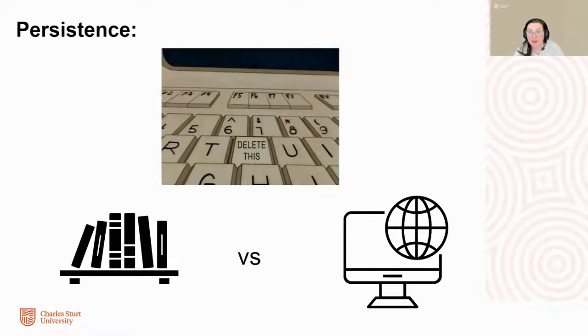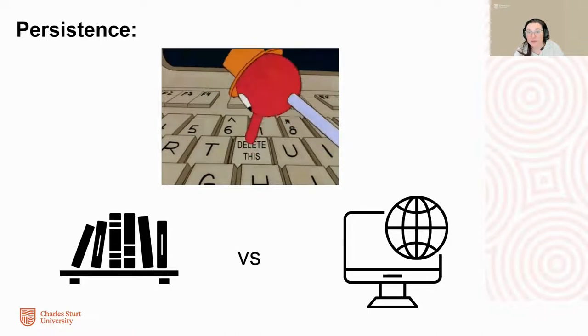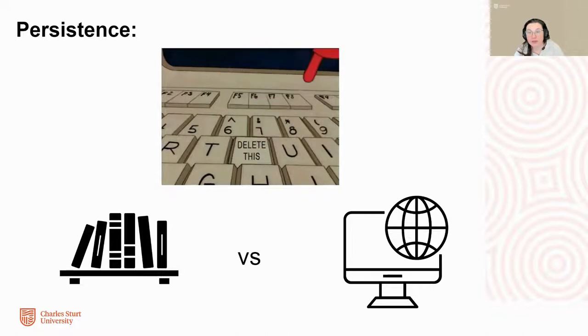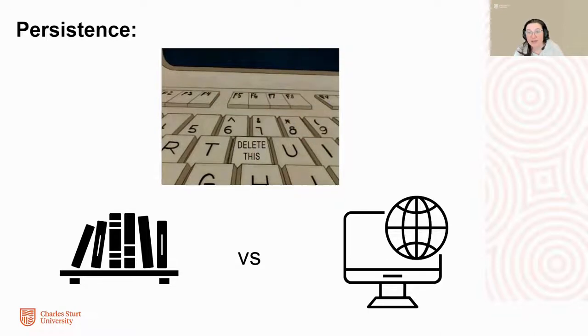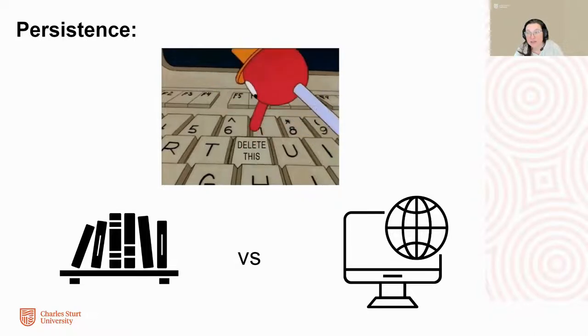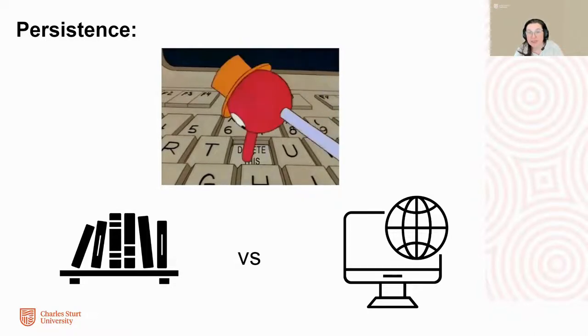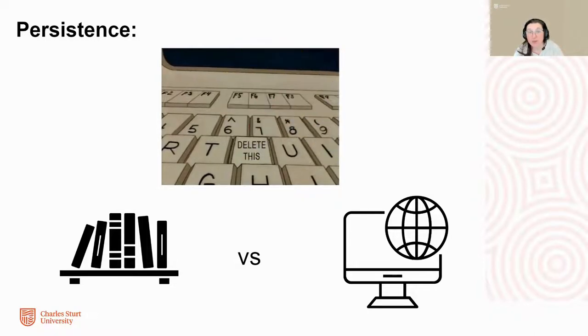Persistence. The development of the written word enabled humanity to record information on a more permanent basis than ever before. Recording or converting information into digital form creates an even more permanent record. Many technological systems make bits permanent by default, that is, they are never truly able to be deleted, although they may appear to have disappeared or be lost.